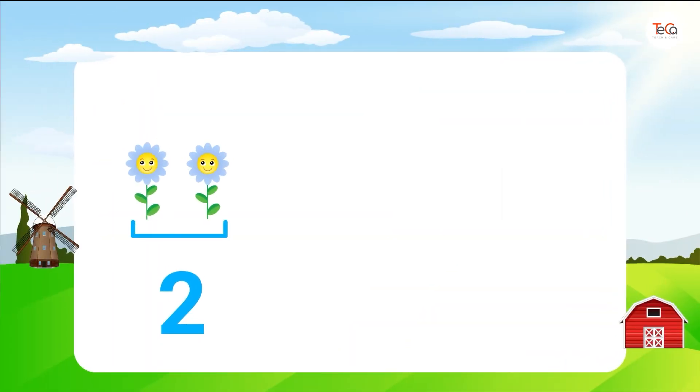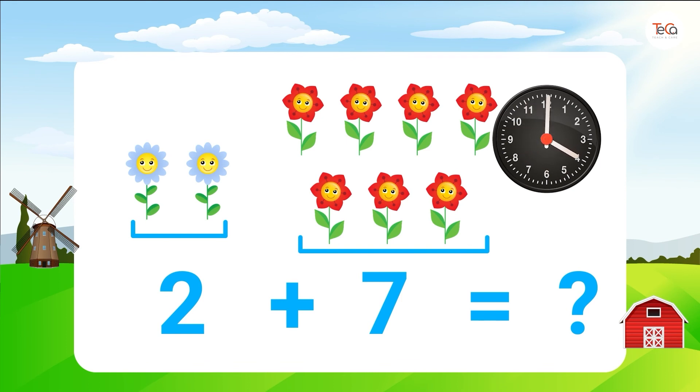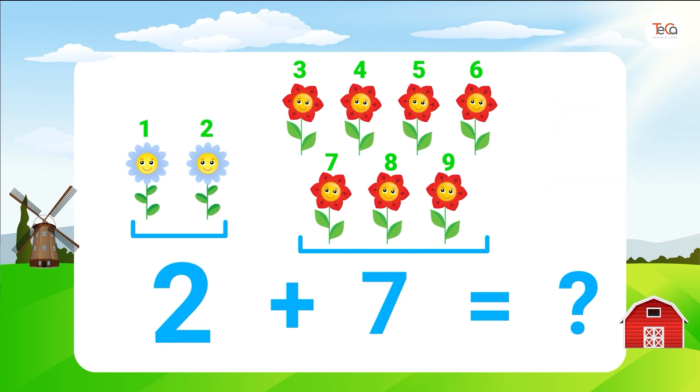Two flowers plus seven flowers equals... Great! Two plus seven equals nine.